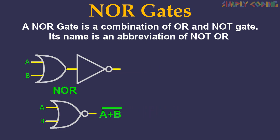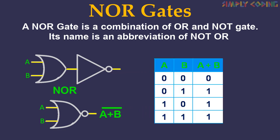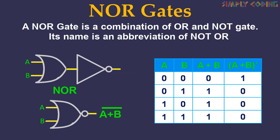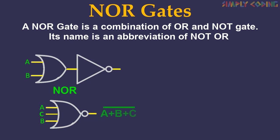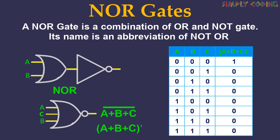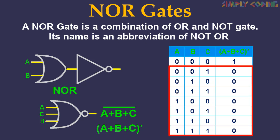You can take the truth table of a two-input OR gate and apply NOT on it to achieve the NOR operation. It is written as (a + b) bar. Similarly, we can draw a three-input truth table. The output of NOR gate is 1 if all of its inputs are 0. The output of NOR gate is 0 if any of its inputs is 1.